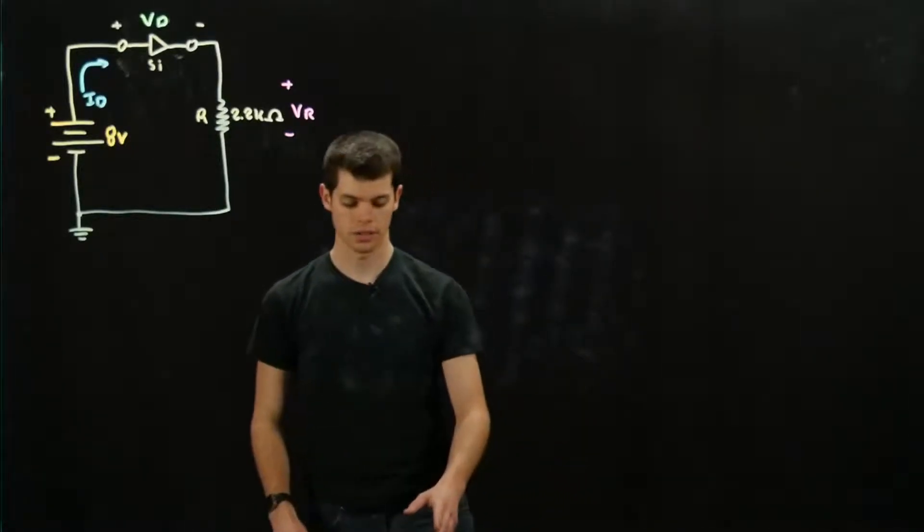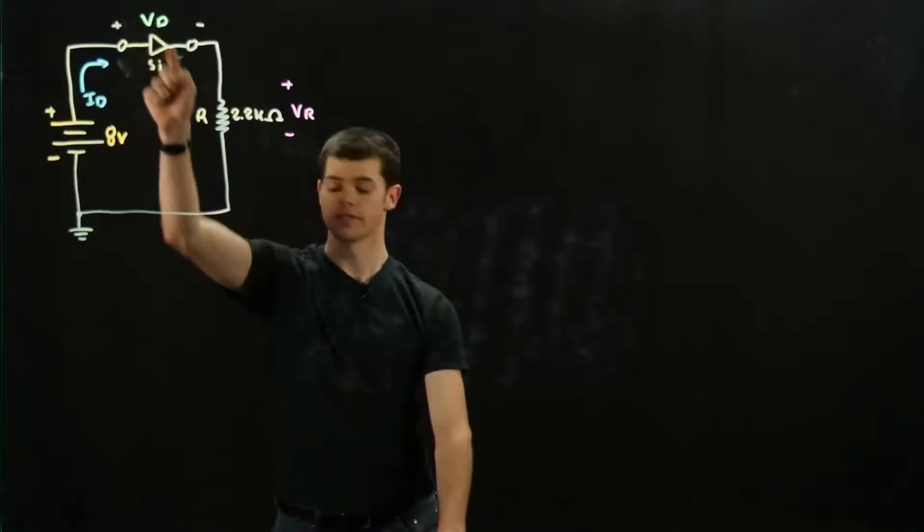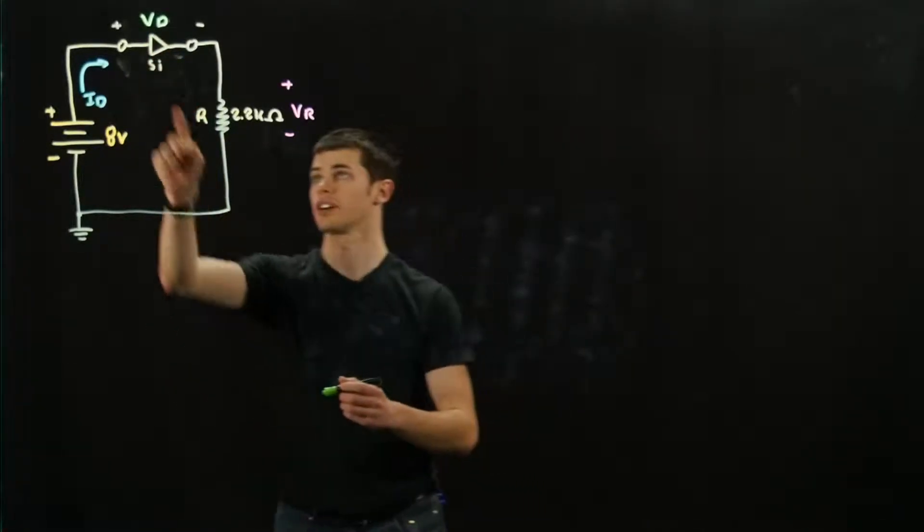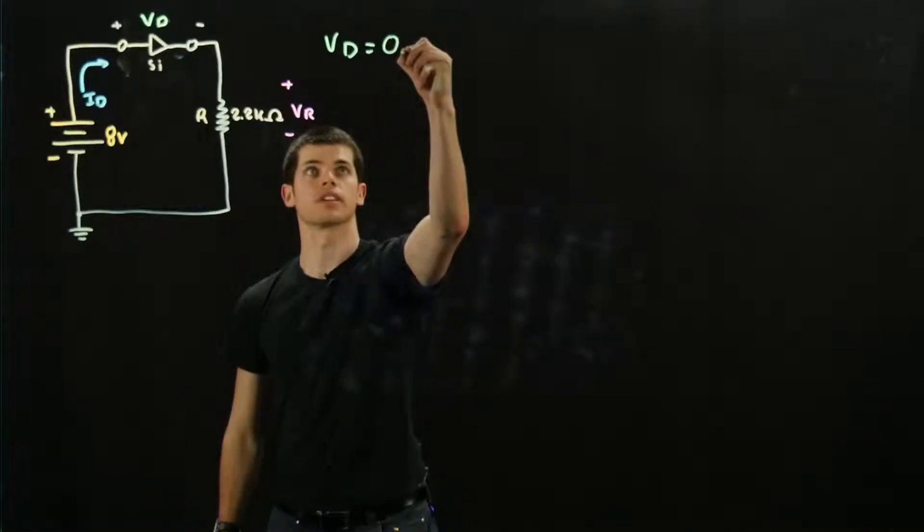So the first thing we're going to want to know about diodes is that diodes have a set voltage drop across them, and this is VD. Since we're dealing with silicon here, VD is going to be equal to 0.7.